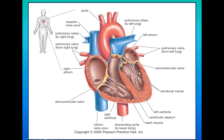The heart is a four-chambered organ. The upper chambers are called the atria — you have the right atrium and the left atrium, atrium being the singular form. The lower chambers are called ventricles — you have the right ventricle and the left ventricle. Now let's focus on how blood flows through these chambers and the functions of each part.